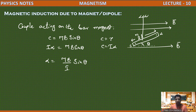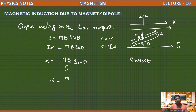Here, sine theta is approximately equal to theta when theta is small. Substituting this, alpha equals (MB/I) times theta. This is in the form of a simple harmonic motion expression, where alpha equals omega squared times theta.